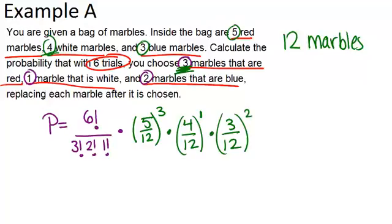At this point we're done and we just need to calculate this. Our calculator can be a big help. Once we go through and do the calculations, we should get an answer of about 0.0899, which means it's about 8.99% chance that we will get exactly three marbles that are red, one marble that is white, and two marbles that are blue.